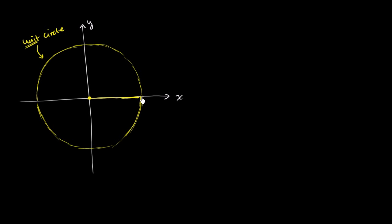What would this coordinate be right over there, right where it intersects along the x-axis? It would be x = 1, y = 0. What would this coordinate be up here? We've gone 1 above the origin, but we haven't moved to the left or the right. So our x value is 0, our y value is 1.